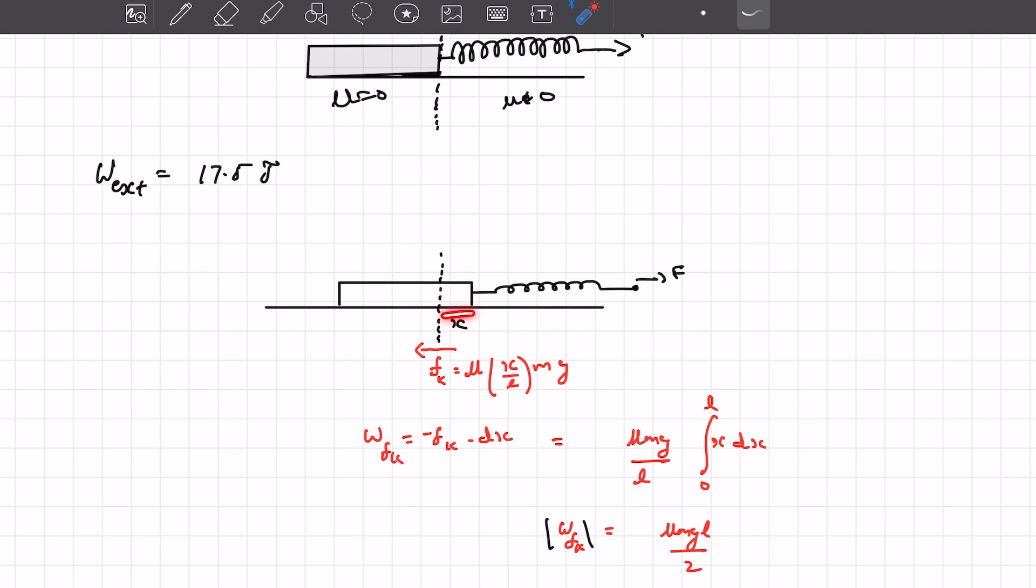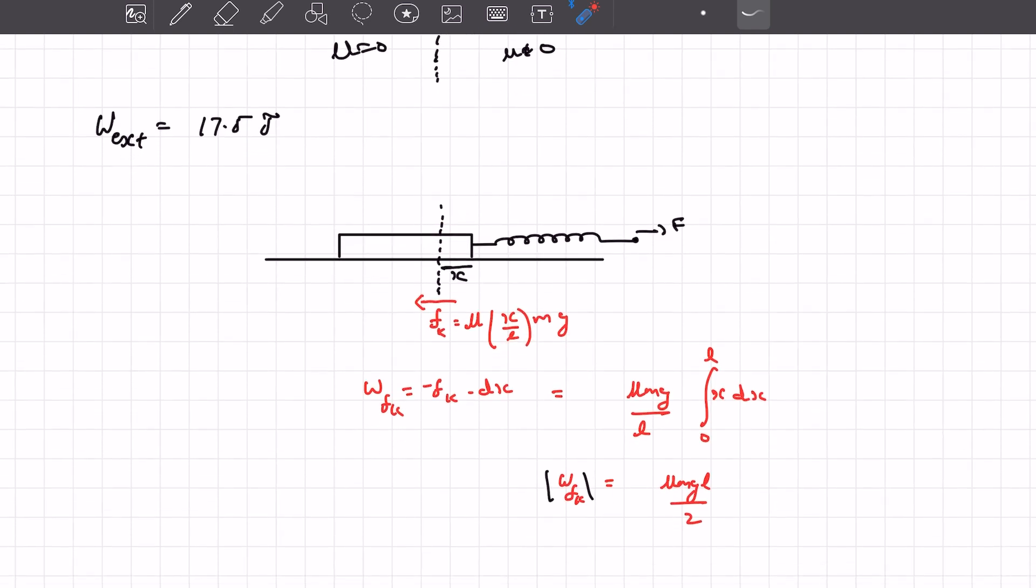As the rod is given to be homogeneous, we can use the linearity principle. The mass of x length would be x by the total length times m into g. So we have the kinetic friction.